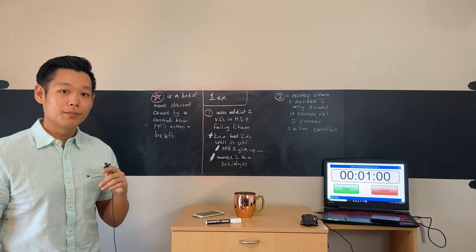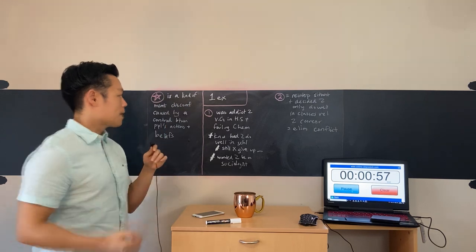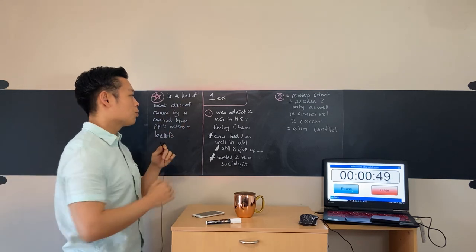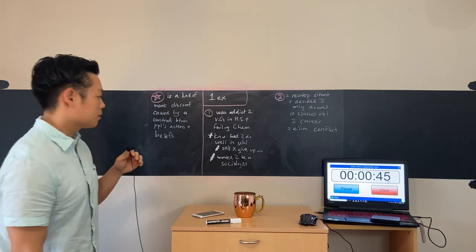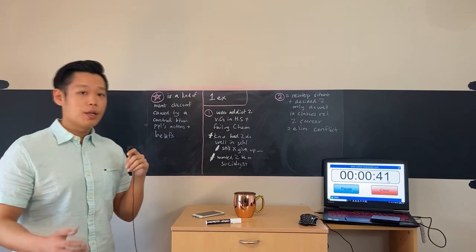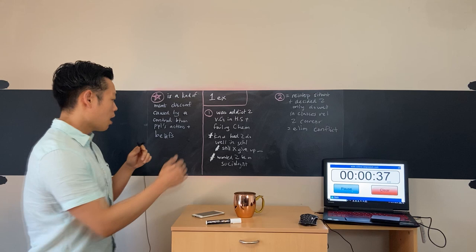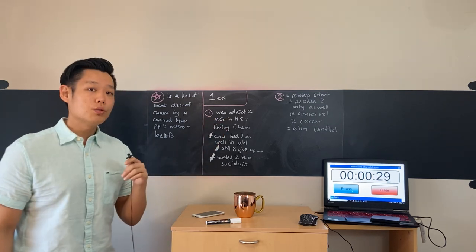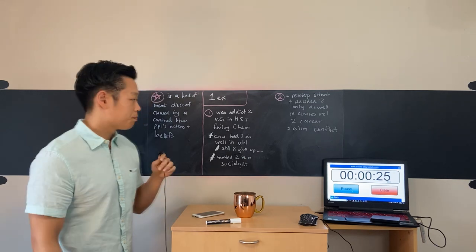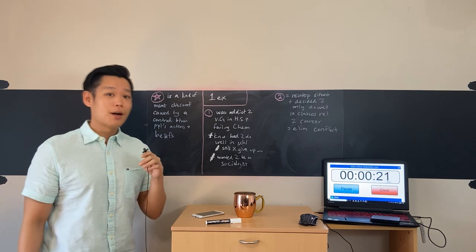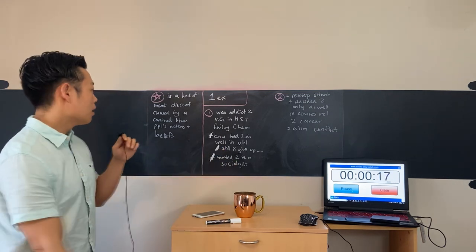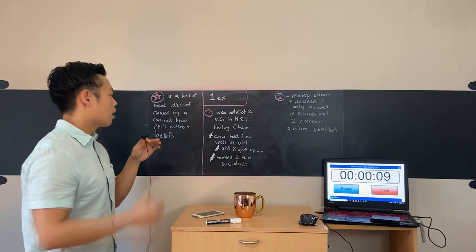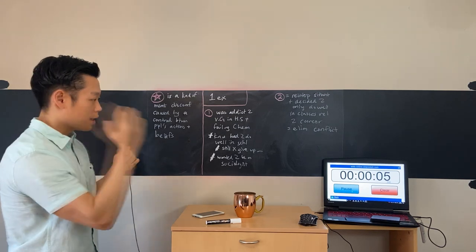In the lecture, the professor elaborated on a specific example from his own life to explain the concept of cognitive dissonance. To begin with, the professor was addicted to video games in high school and was failing chemistry class. Plus, he knew that he had to do well in school in order to get a good job, but he still could not give up video games. On the other hand, the professor wanted to be a sociologist, so he reinterpreted the situation and decided to only do well in the classes directly related to his future career. Needless to say, he was able to eliminate this conflict by simply changing his perspective. To sum up, this was a perfect example of cognitive dissonance, which is a kind of mental discomfort caused by a contradiction between people's actions and their beliefs, as given by the professor in the lecture.